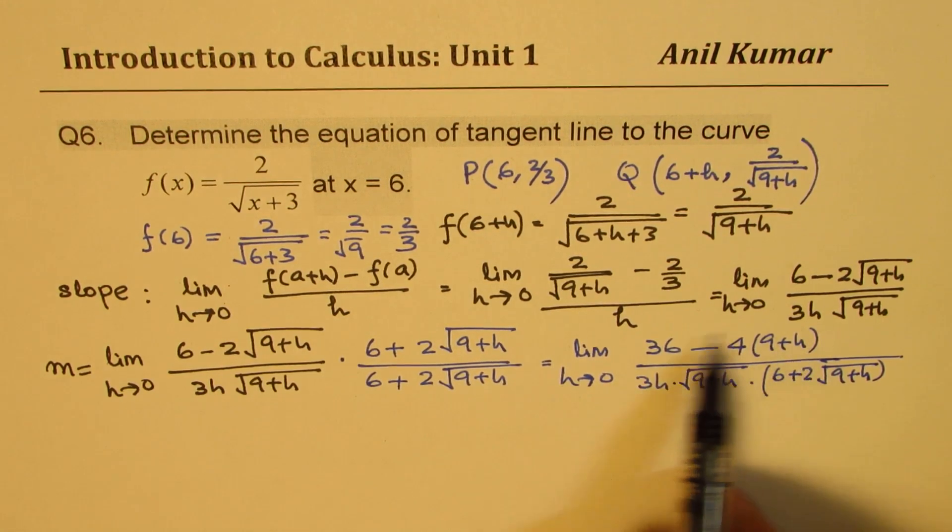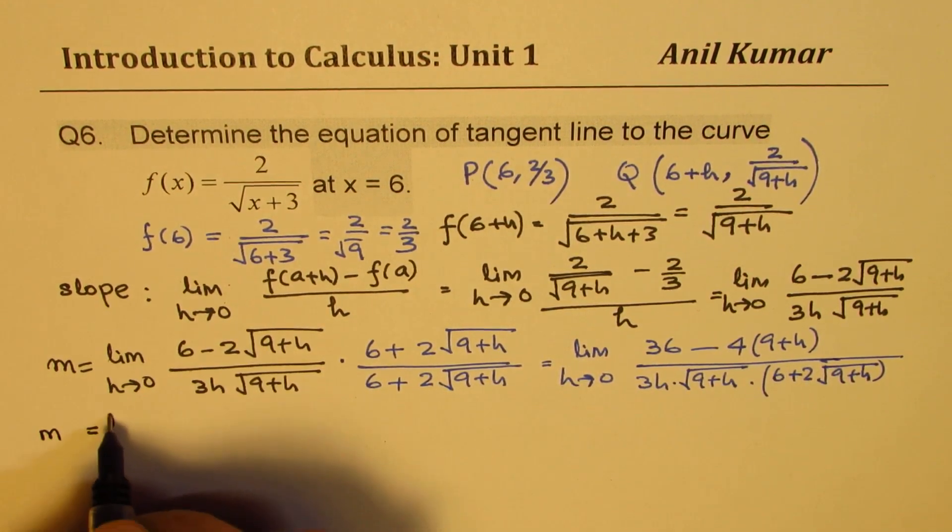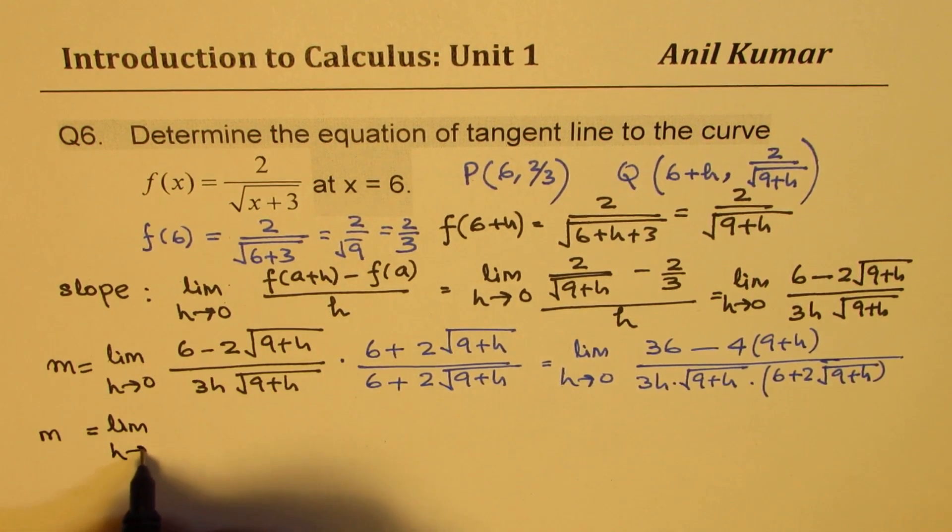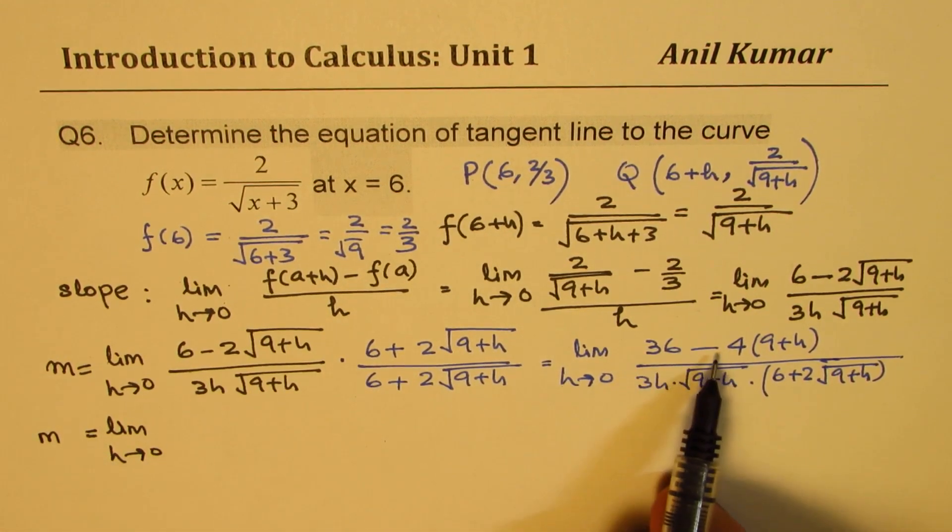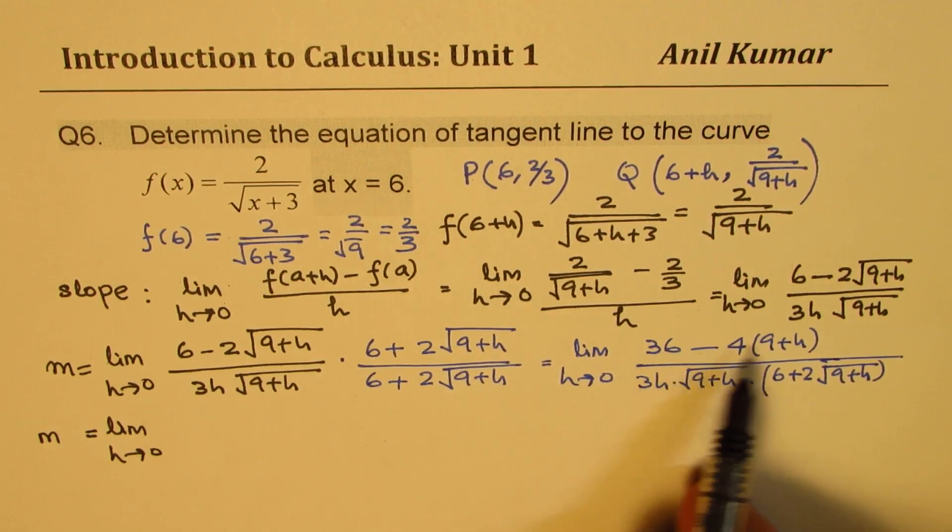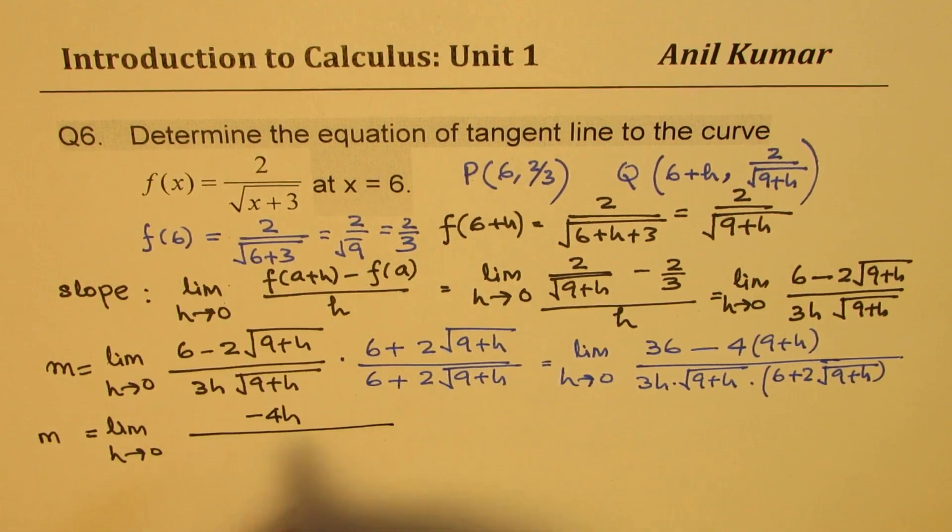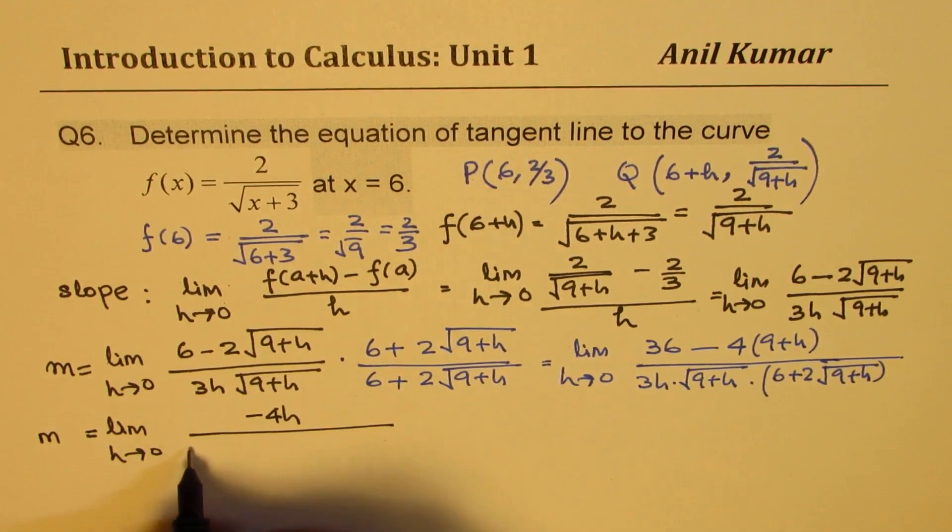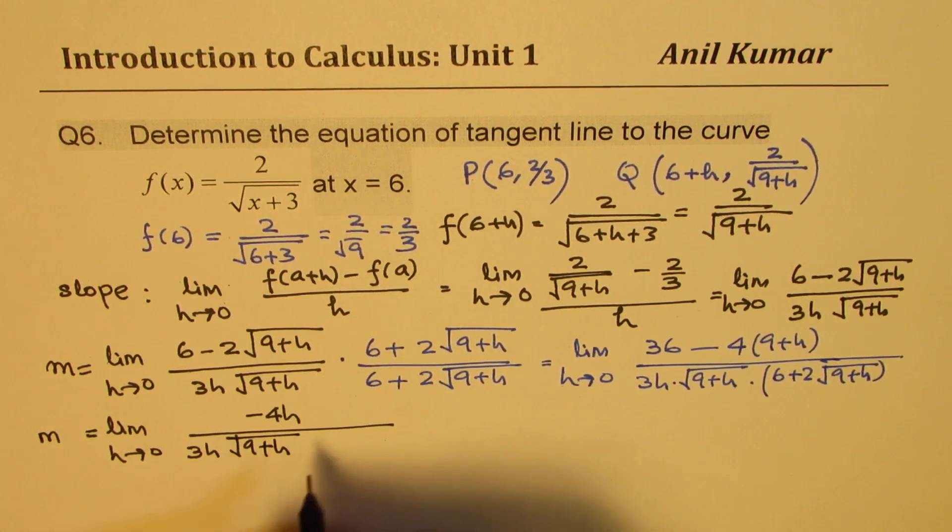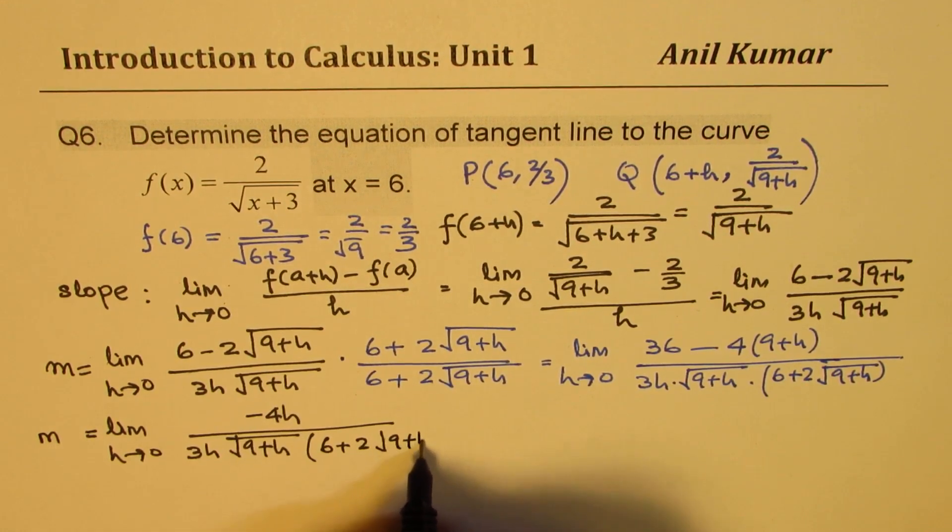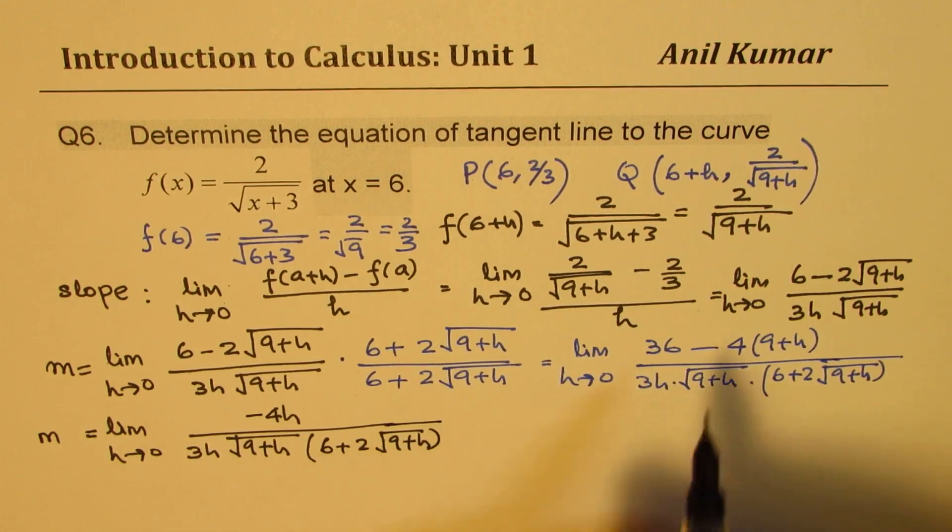Now if I open this numerator, what do I get? I get slope m = limit h approaches 0: 36 - 36. Do you see that part? So 36 cancels. So we're left with -4h above. So we have -4h over all this, which is 3h√(9+h)(6 + 2√(9+h)). So that 36 and 4 times 9 cancels.